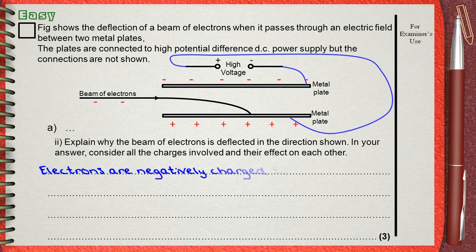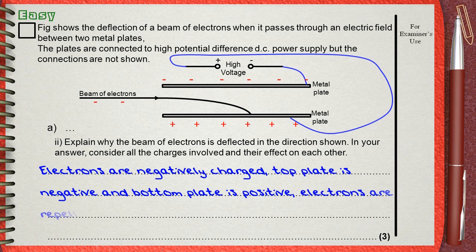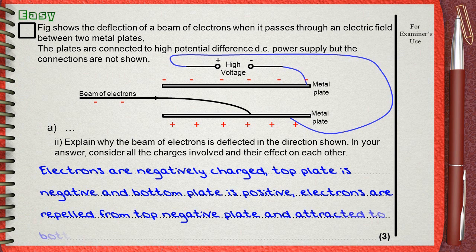Electrons are negatively charged. The top plate is negative and the bottom plate is positive. Electrons are repelled from the top negative plate and attracted to the bottom positive plate.